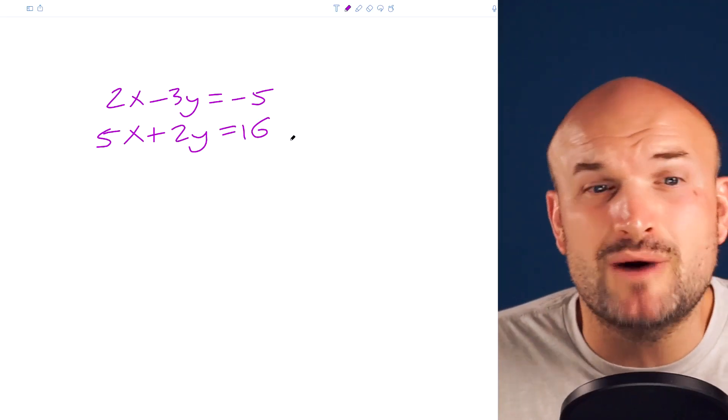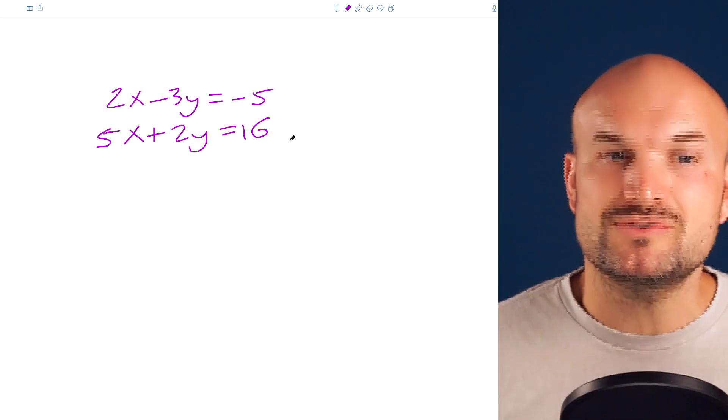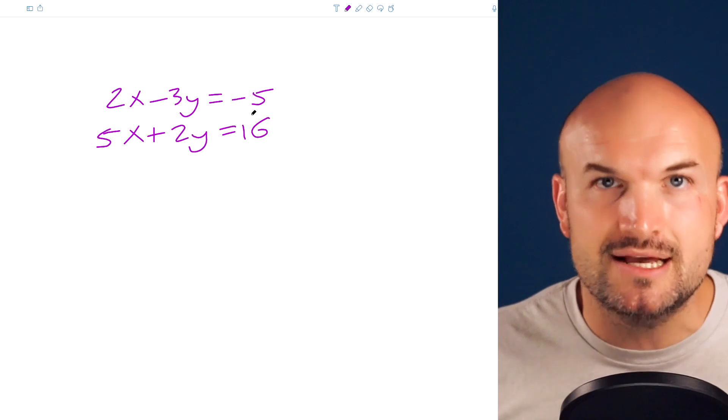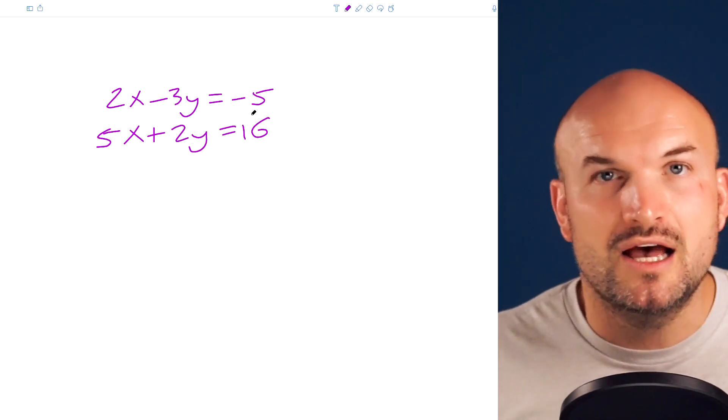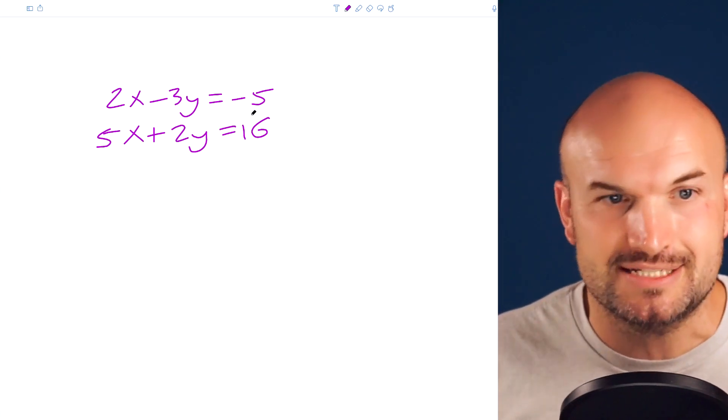So let's go back and take a look at where students will make this type of mistake. So in this equation, I have a 2x minus 3y equals negative 5 and a 5x plus 2y is equal to 16. Now in this case, we're going to want to use elimination and we're going to want to eliminate the y. And the reason being is because the coefficients of our y variable has a smaller least common multiple than our x's.